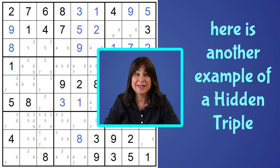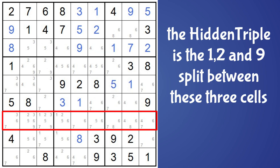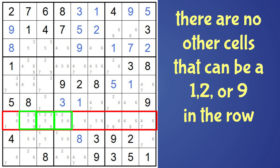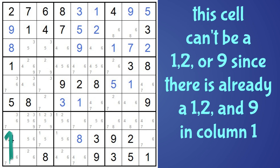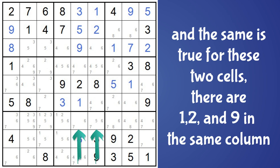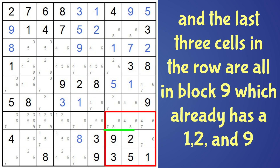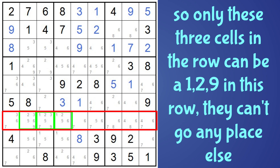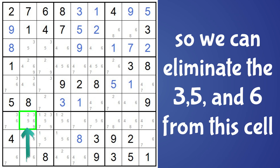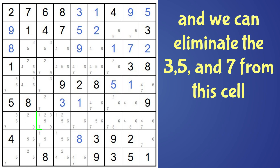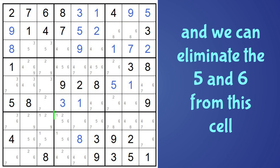Here's another example of a hidden triple. Can you find it? This time it's in a row. It's the one, two, nine split between these three cells. There are no other cells that can be a one, two, or nine in the row. This cell can't be a one, two, or nine because there is already a one, two, nine in column one, and the same is true for these two cells. The last three cells in the row are all in block nine, and there's a one, two, and nine already in block nine. So only these three cells in the row can be a one, two, nine. There's nowhere else in the row these numbers can go, so we can eliminate the three, five, and six from this cell, and the three, five, seven from this cell, and the five-six from here.